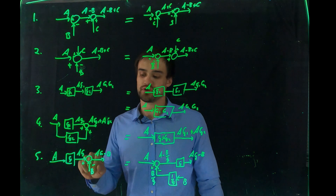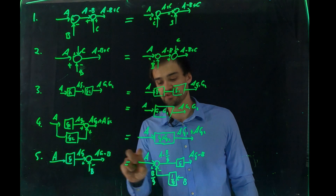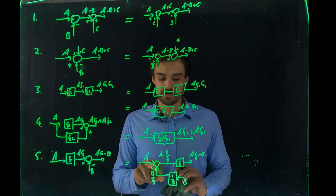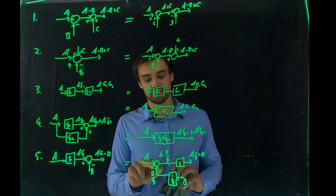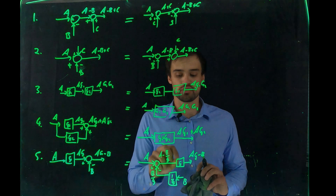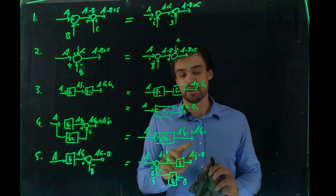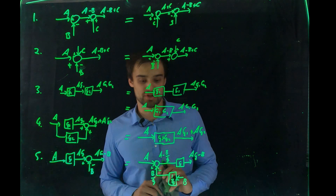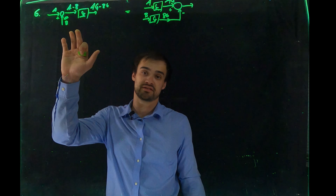Rule five says: if input A goes through G giving A·G, and then B is subtracted to give A·G minus B, this is equivalent to having A at the summing junction with B divided by G (i.e., B/G subtracted from A), and the whole term then going through G, resulting in A·G minus B.